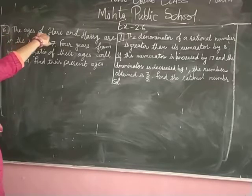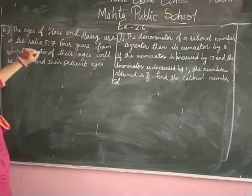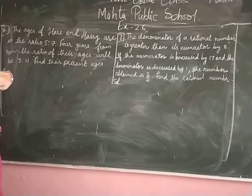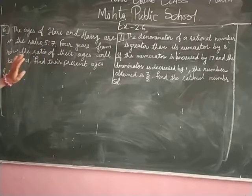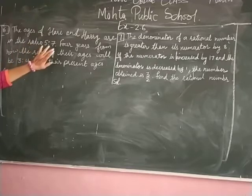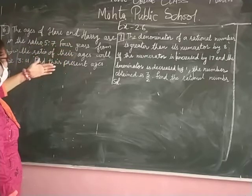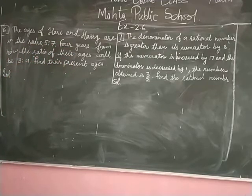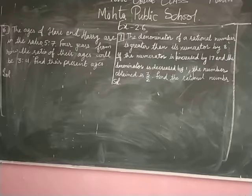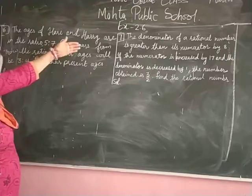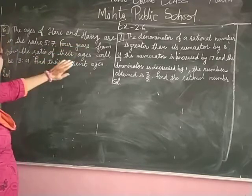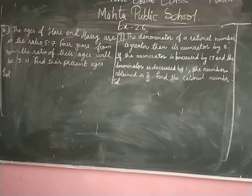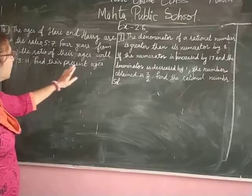The ages of Hari and Harry are in the ratio 5:7. Four years from now, the ratio of their ages will be 3:4. Find their present ages.